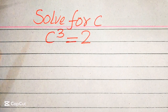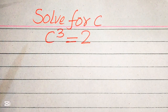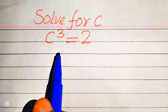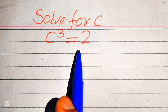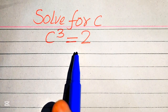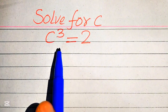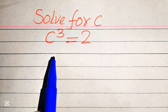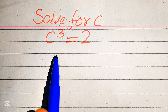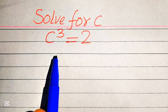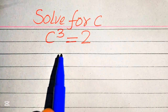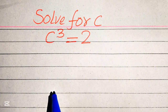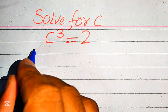Hello everyone, today I want to show you how to solve this problem for the values of c. We have c cubed equals 2, and we solve this problem for all values of c. The degree of this equation is 3, which means it has 3 roots. We find all 3 roots, whether they are real or complex.